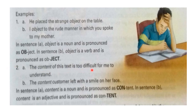Sentence A: 'The content of this text is too difficult for me to understand.' Sentence B: 'The content customer left with a smile on her face.' In sentence A, 'content' is a noun and is pronounced as 'CONtent' — stress on 'con'. In sentence B, 'content' is an adjective and is pronounced as 'conTENT' — stress on the second syllable. So when it is a noun, the stress is on the first syllable; when it is an adjective, it is on the second syllable.